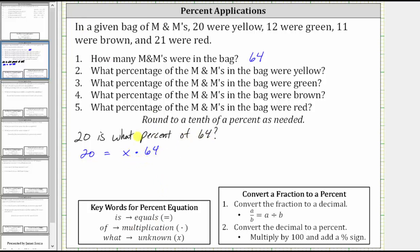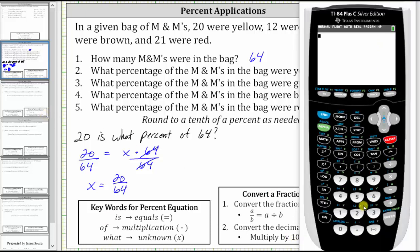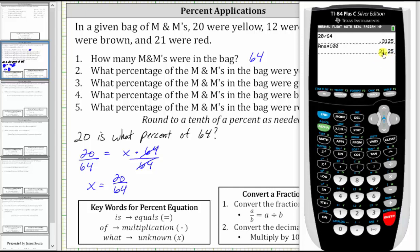To undo the multiplication and solve for X, we divide both sides by 64. Simplifying, 64 divided by itself simplifies to one, giving us X equals 20/64. Now we need to convert the fraction to a percent — we first divide, then multiply by 100 and add a percent sign. Going to the calculator, 20 divided by 64 gives us the decimal. We move the decimal point two places to the right and add a percent sign, giving us 31.25%. Since we round to the nearest tenth of a percent and have a five in the hundredths place, we round up to 31.3%.